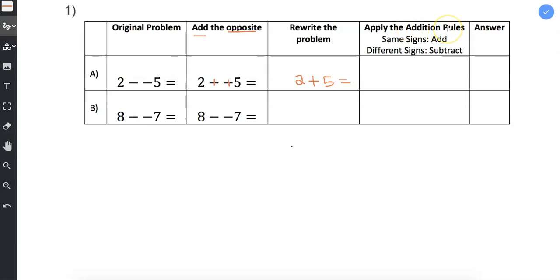And then we apply our addition rules. 2 plus 5, both signs are the same, so we're going to add. 2 plus 5 is 7. I don't really need to show my work here because I already know 2 plus 5 is 7, but there's plenty of room in this box if you get to a problem where you need to show your work.